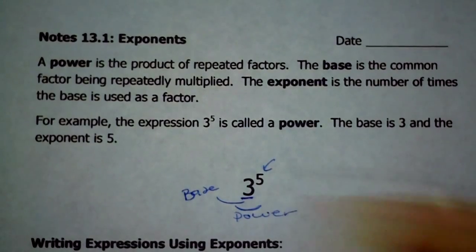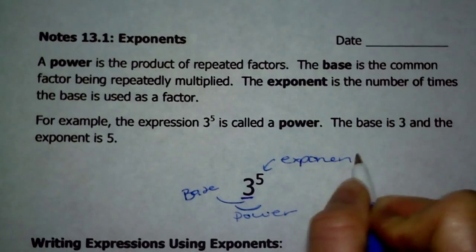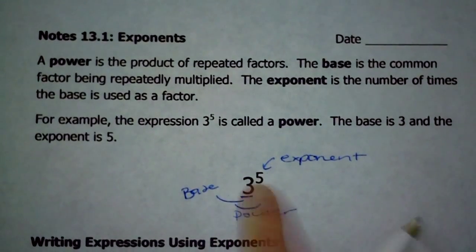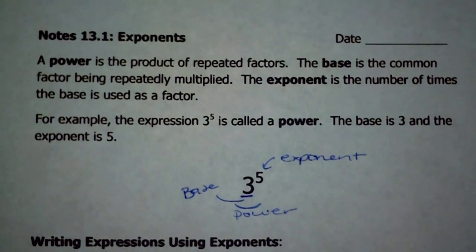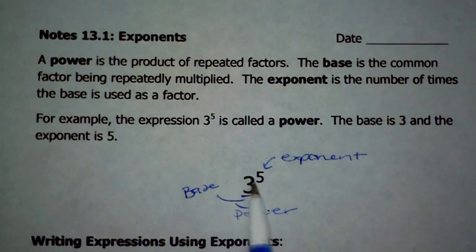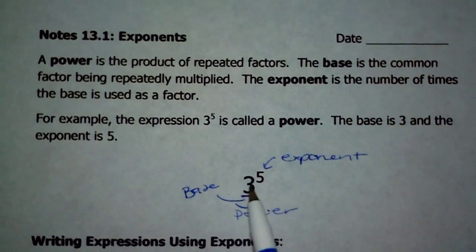And this little 5 right here is called the exponent. So again, the entire expression — 3 to the 5th power — that is written as a power. So if the directions say write each expression as a power, I'm asking you to write it as a base and an exponent. When I say base, I'm referring to the large number — it's the factor that's being repeatedly multiplied. And when I say exponent, it's that little number that tells me how many times I have this.